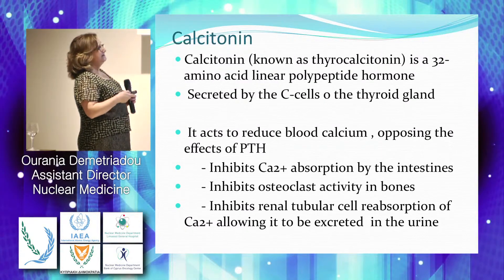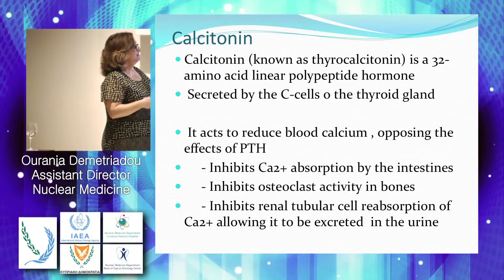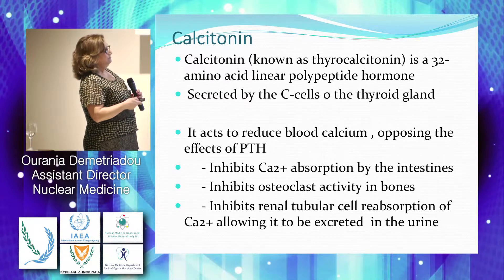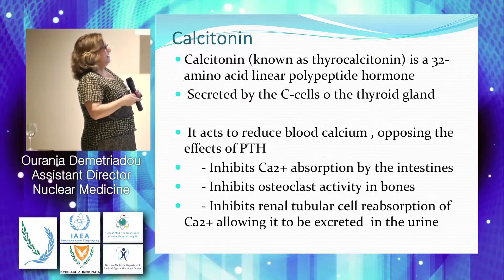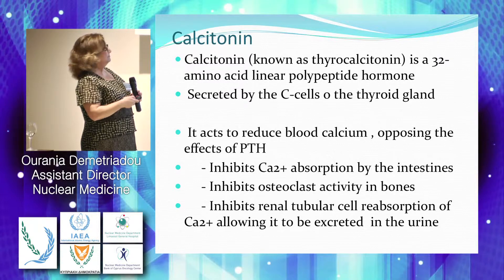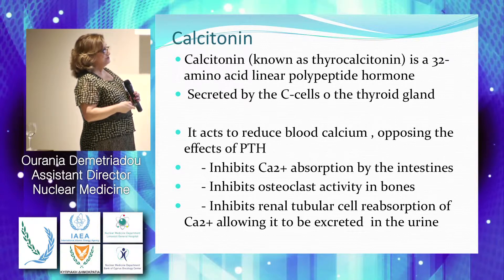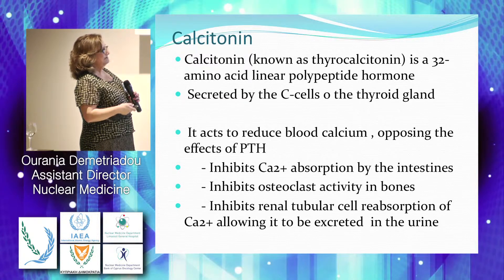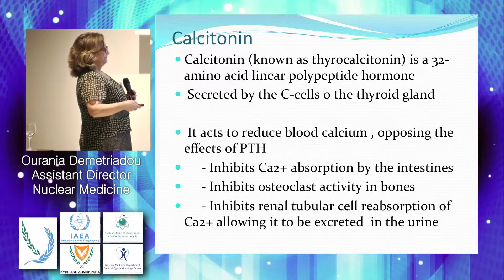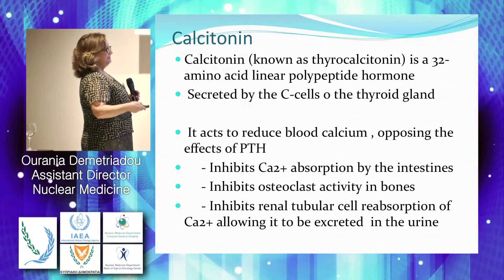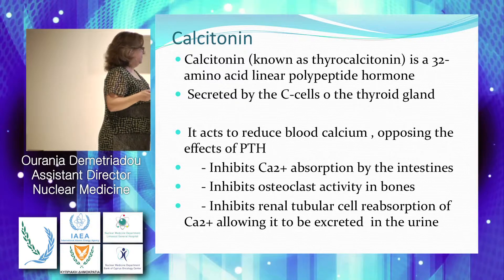Calcitonin is secreted by the C-cells of the thyroid and acts to reduce blood calcium — the opposite function of PTH produced by the parathyroid glands — by inhibiting calcium absorption by the intestine, inhibiting osteoclast activity in the bones, and inhibiting renal tubular cell reabsorption, allowing calcium to be excreted via the urine.